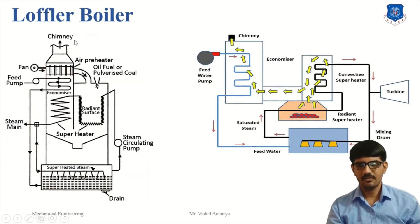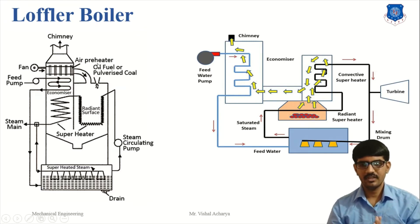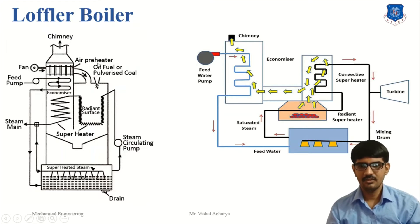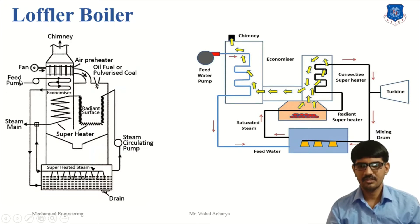First is the low-flow boiler. The main working principle of the low-flow boiler: here the production of superheated steam occurs, where 2/3rd steam is used in an evaporating drum and 1/3rd steam is transferred to the turbine tube for producing work. The main device here is a feed pump for circulating the water in an economizer. The economizer is a device to increase the temperature of the feed water.